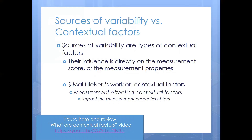You might wonder how this relates to the working group on contextual factors. Sources of variability are types of contextual factors — specifically, influences directly on the measurement score and the measurement properties of the instrument being considered. In Sabrina May Nelson's work on contextual factors, these would be the measurement-affecting contextual factors, where the impact is on the measurement properties of the tool considered in the OMRAC filter. They could cause one instrument to pass the filter and another to fail because of this source of variability. If this is new to you, you're encouraged to review the contextual factors videos.